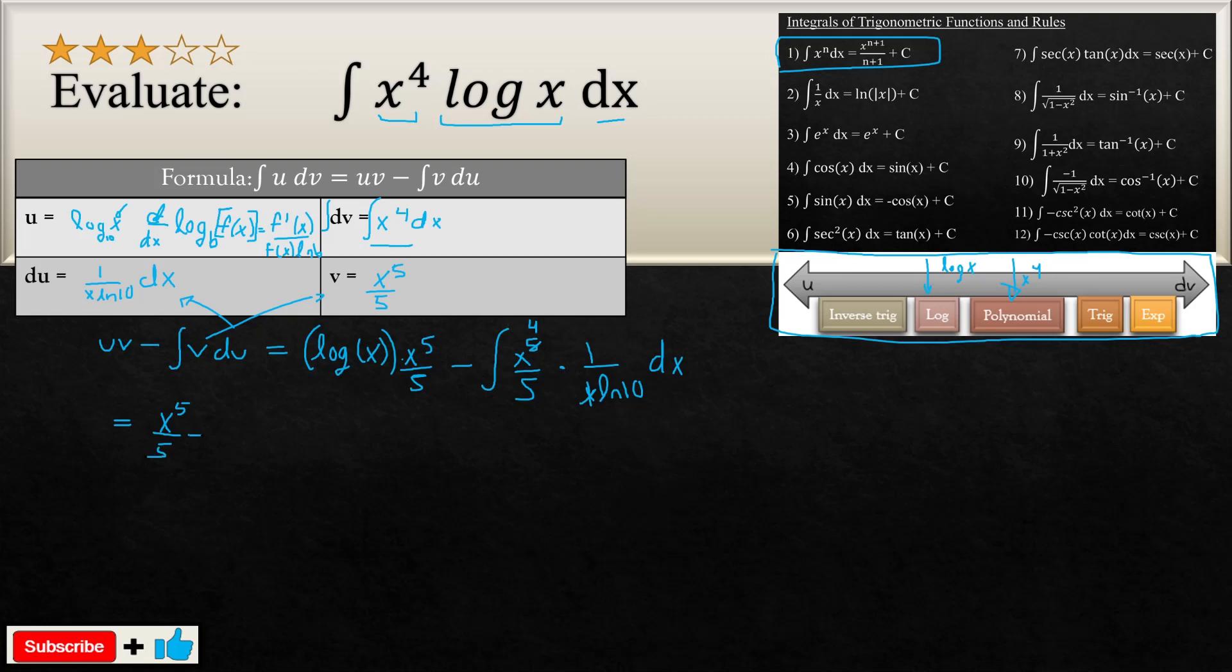So we're going to drag it out. Oh sorry, this should be a ln. I forgot to write ln. So this should be a multiplication of log X. And it's going to be minus by 1 divided by 5 ln of 10. Now you're going to have still the integral of X to the fourth DX.